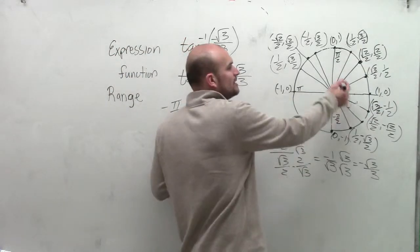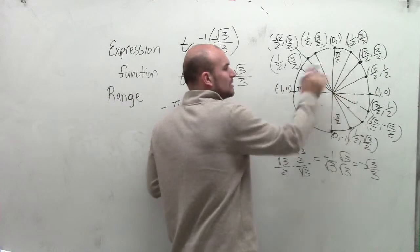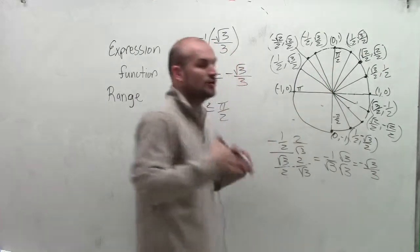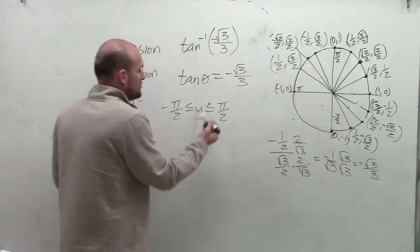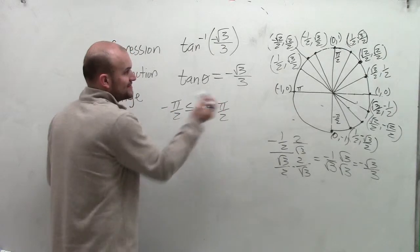Make sure we don't include the positive angle, because that positive angle goes outside of our range, which we cannot do. We have to make sure we fall within the range of negative pi halves and pi halves.